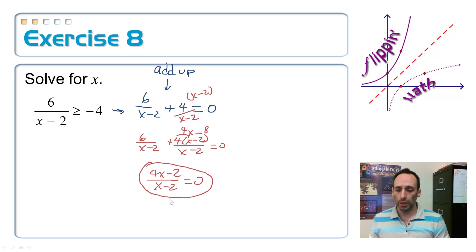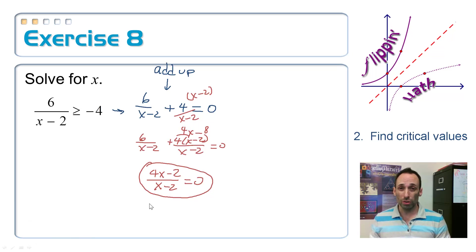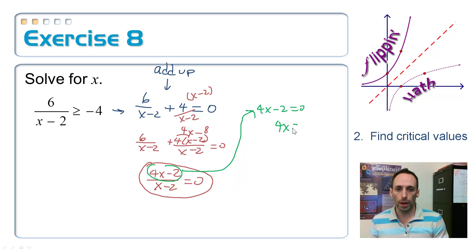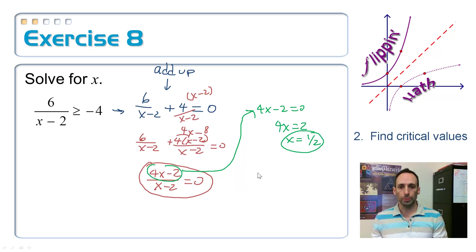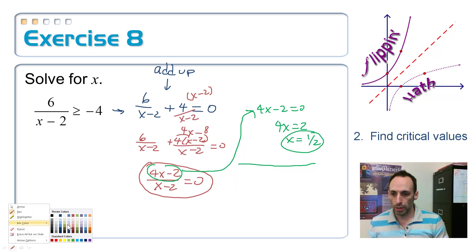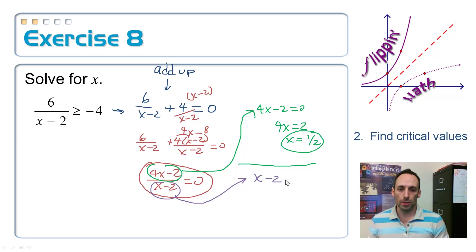Now find the critical values. From the numerator: 4x − 2 = 0, so 4x = 2, giving x = 1/2. That's one critical value. From the denominator: x − 2 = 0, so x = 2. So I have two critical values: 1/2 and 2.